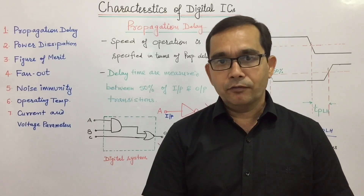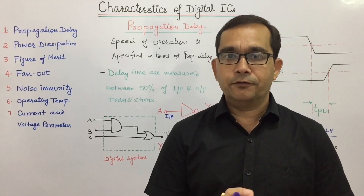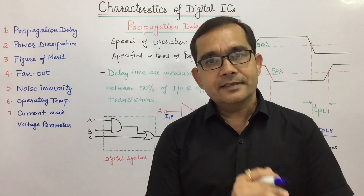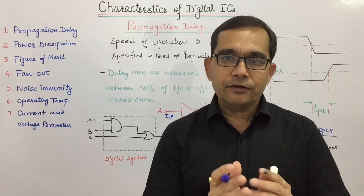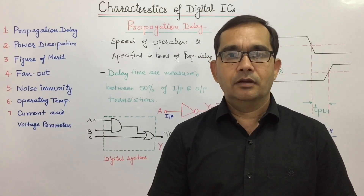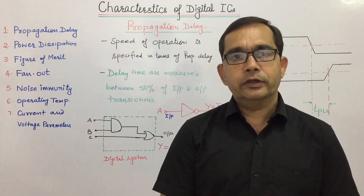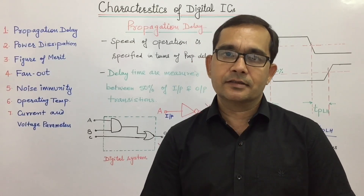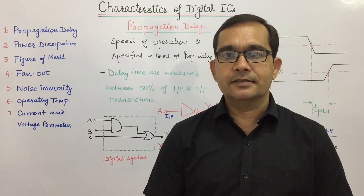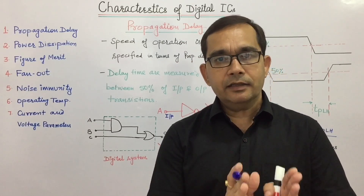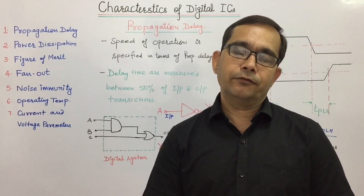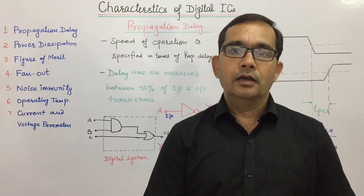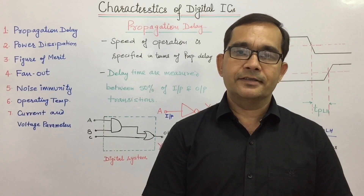In this presentation, we will learn about the different characteristics of digital ICs. IC is the abbreviated form of integrated circuits. The ICs which we are using in digital circuits are known as digital ICs. In this chapter, we will learn about different logic families: RTL, DTL, TTL, and CMOS ICs.